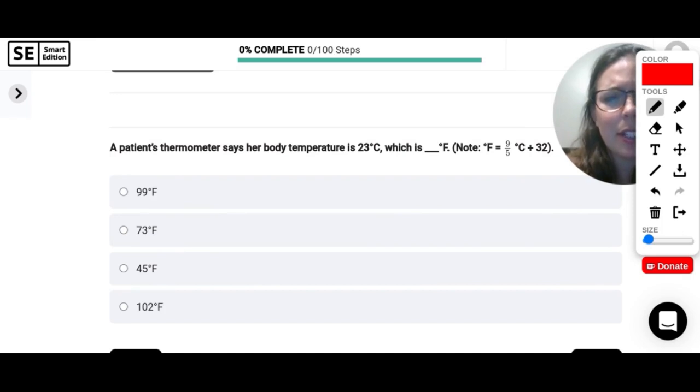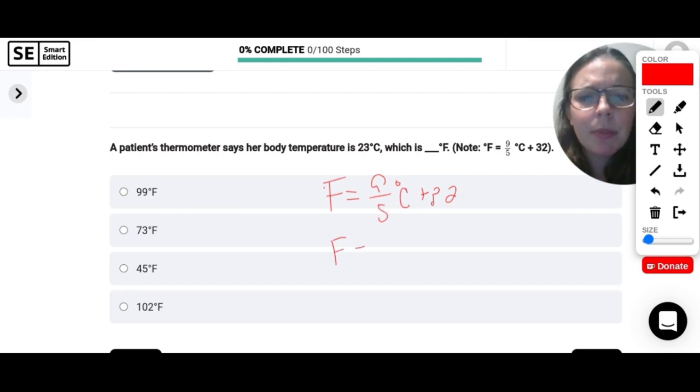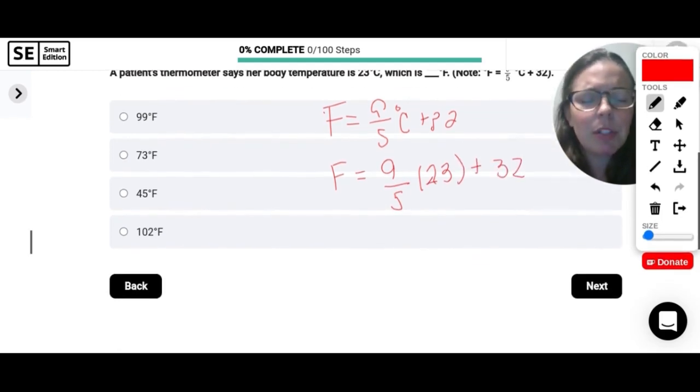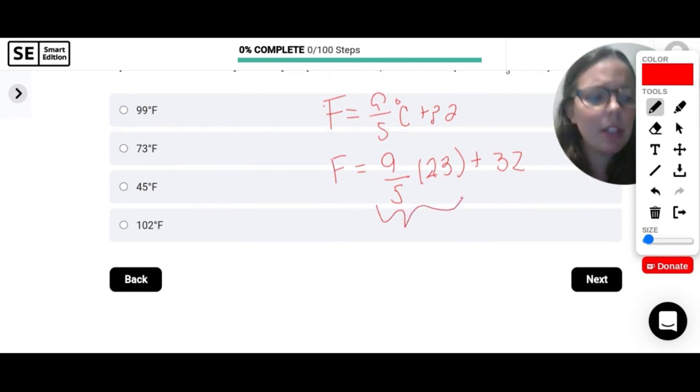A patient's thermometer says her body temperature is 23 degrees Celsius, which is how many degrees Fahrenheit? So we have our formula here. Fahrenheit equals 9 fifths times whatever our degree Celsius is plus 32. So let's plug in what we know. So 9 fifths times 23, 23. And then we need to add 32 to that. So we have to make sure we do the multiplication first. So 9 fifths times 23 will give me 41.4 and then add 32 to that. So I should get about 73.4. And if I look at all my answers, I'm going to round to the nearest whole number. So this will just be 73.